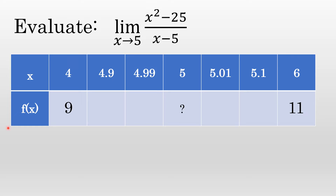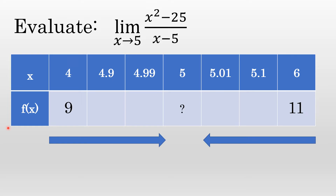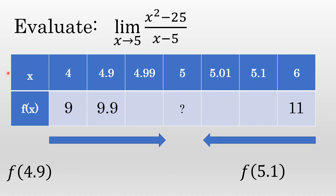But you can't be sure unless you delve a little deeper. Let's get closer to 5, approaching from the left and from the right — are those values approaching the same number? If they are, that number is called the limit as x approaches 5. Evaluating f of 4.9: 4.9 squared minus 25 over 4.9 minus 5 is 9.9. How about 5.1, a number a tenth bigger than 5? It's 10.1. This is looking like the limit as x approaches 5 is going to be between 9.9 and 10.1 — likely 10.